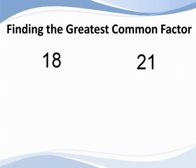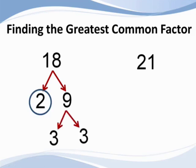Let's try a second example. What is the greatest common factor between eighteen and twenty-one? The best strategy is to first factor each number into the product of its prime. Eighteen is equal to two times nine. Two is prime, so it is circled. Nine is equal to three times three, both of which are prime. So eighteen is equal to two times three times three.